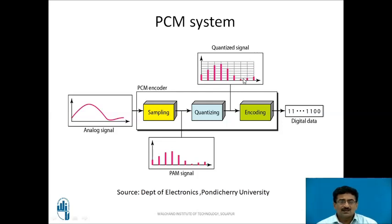Another example: if the sample value is 0.2 volts, it lies between 0 and 1 volt and is approximated to 0 volts since it is closer to 0. So quantization is nothing but an approximation — actual sample values are approximated to known standard values. The difference between two quantization levels is known as the step size.